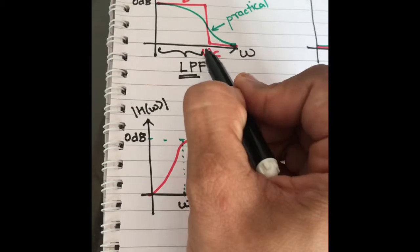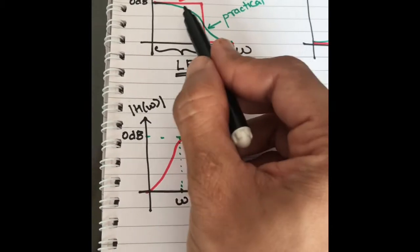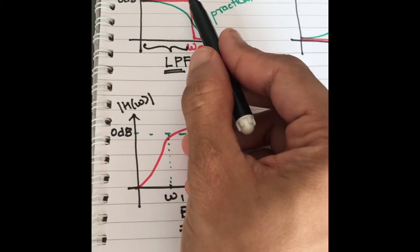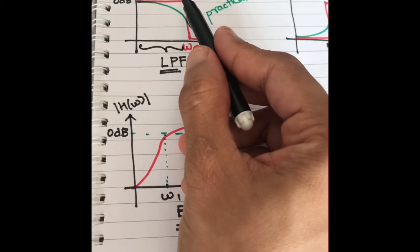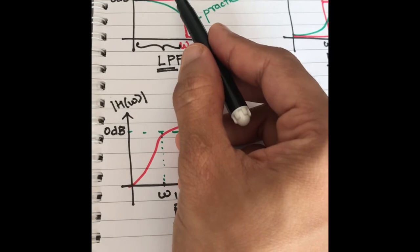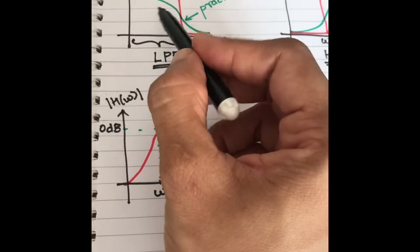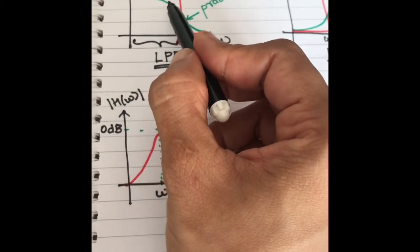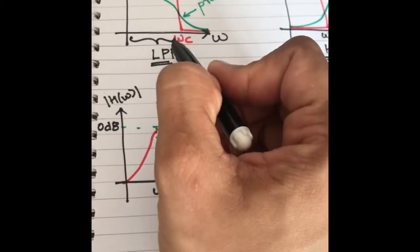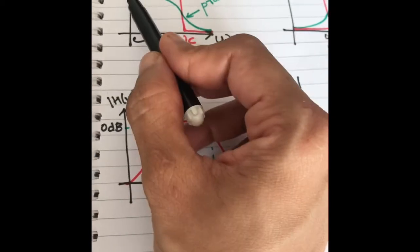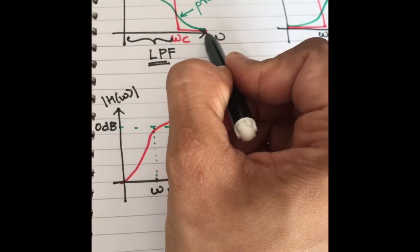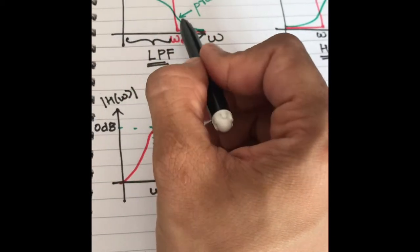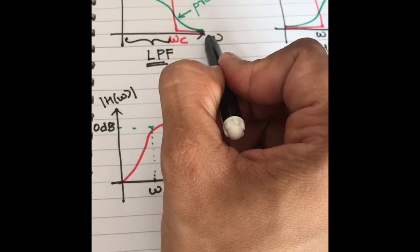The graph in red is the ideal filter, which means it has infinite order. It is impractical to design an ideal filter. The response of the practical filter is shown in the green graph.